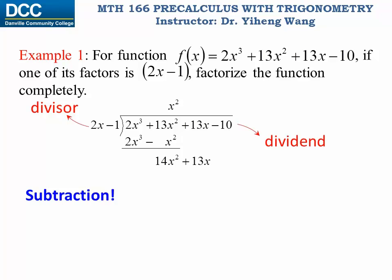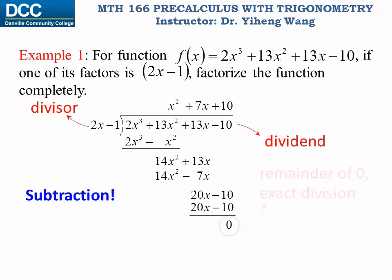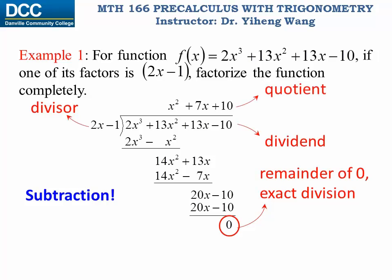Then we write down the next term, which is plus 13x, and do the similar thing. We want to write a term that when multiplied by 2x minus one will get close to 14x squared. In this case it's 7x, because 7x multiplied by 2x minus one is 14x squared minus 7x. When we do subtraction again, 14x squared gets cancelled out and we get 20x. We write down the next term, which is minus 10. The last term is 10, because 10 multiplied by 2x minus one is 20x minus 10. Therefore when we do subtraction again, we get a remainder of zero, which indicates an exact division. Therefore this is the quotient we're looking for.